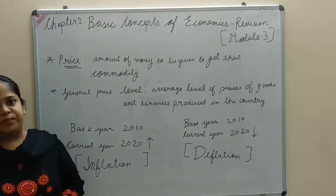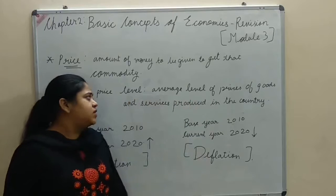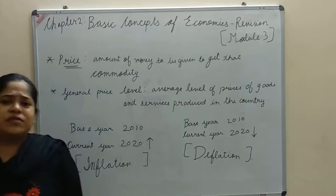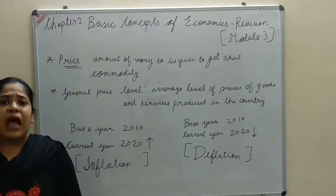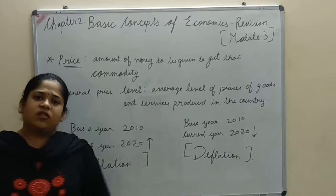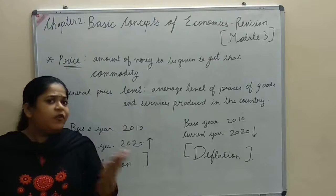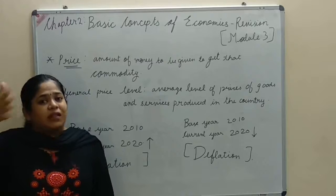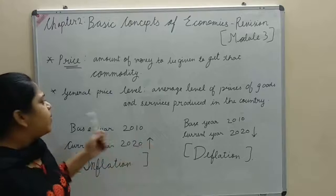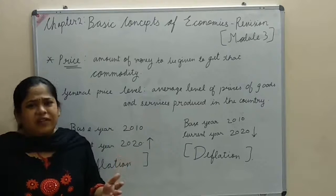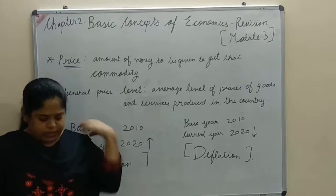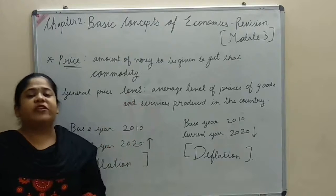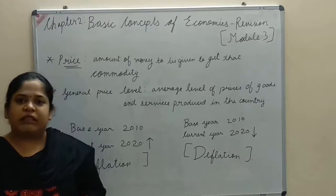General price level is the average level of prices of goods and services produced in the country. Suppose there are 1,000 goods and services produced in the country — the average price is all the prices of the goods divided by 1,000. General price level is measured to check whether it has increased or decreased in the economy.